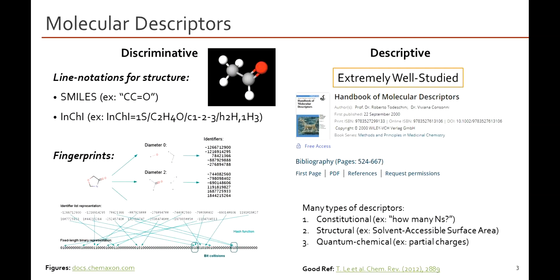There are also fingerprints, which take a molecule and encode it as a quick reference of a fixed number of bits. On the descriptive side of representations, there's also a large volume of work. One textbook from 20 years ago has over 140 pages of references describing different ways to capture key features of a chemical substance, such as constituent descriptors like how many nitrogens are in a molecule, solvent-accessible surface area, or statistics of partial charges on each atom.